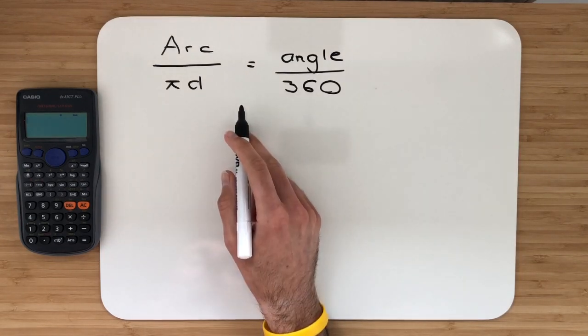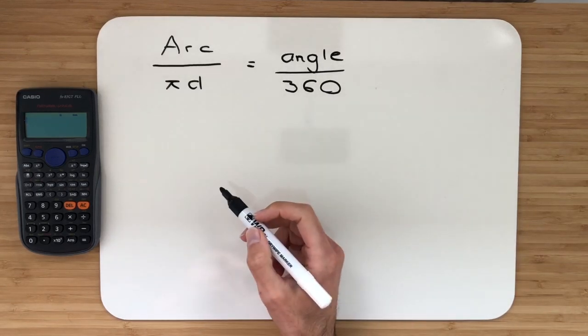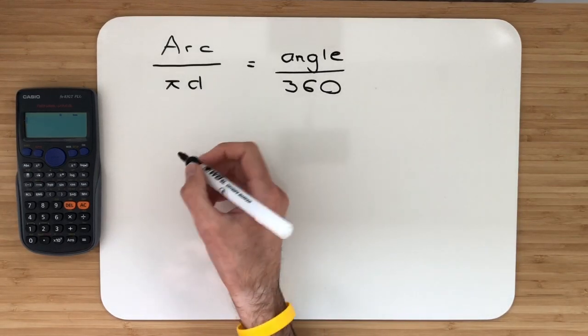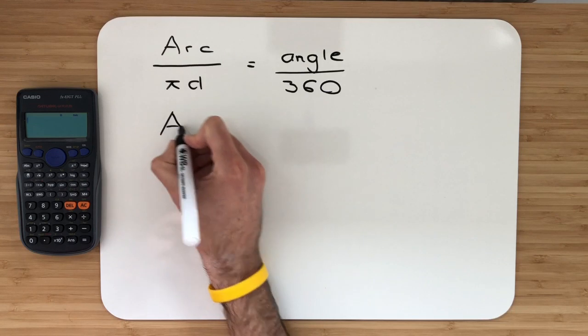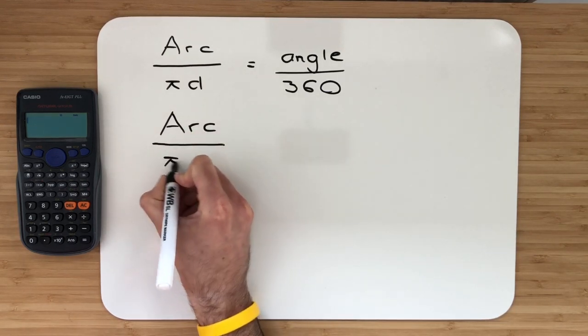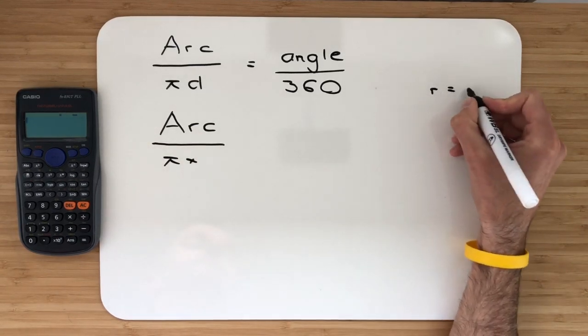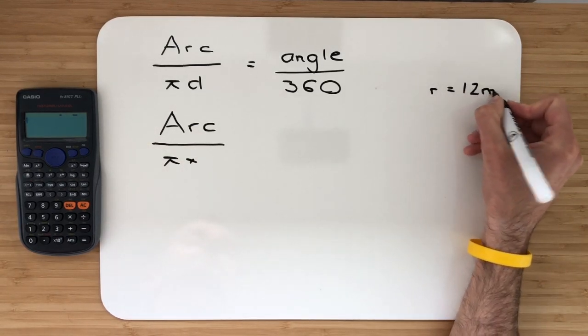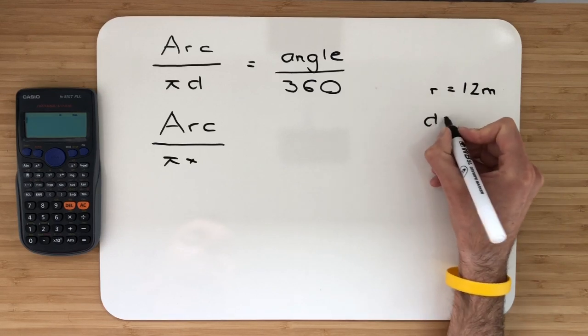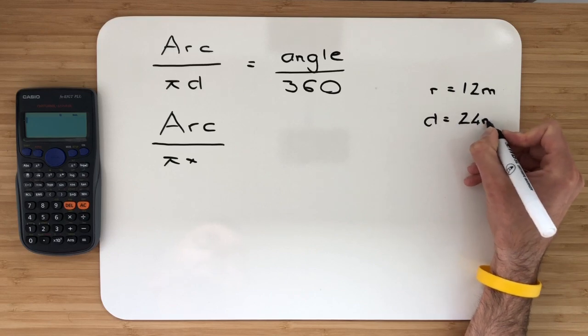We're going to start with our formula. I've got arc over pi d is equal to angle over 360. From here, we're looking to solve for the arc over pi multiplied by the diameter. The radius was 12 metres. We should now easily know that the diameter is twice the radius, so that would be 24 metres.